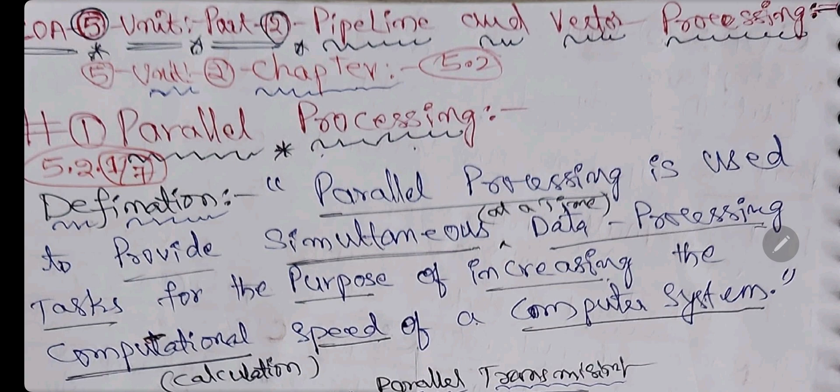MJ Flynn is the scientist's name. Sometimes we will get some out-of-syllabus subtopics in the question paper. So we need to prepare those also to reduce exam fear. That's why I am making this video. The question is: what is parallel processing and explain MJ Flynn's classification of computers - that is nothing but array processor. I will explain both now, and we will also cover the short answer question.